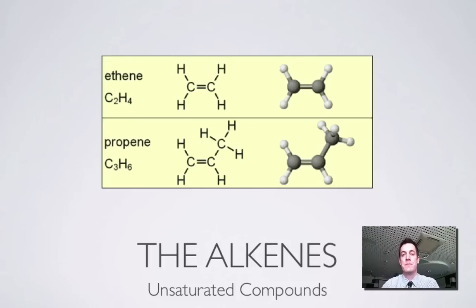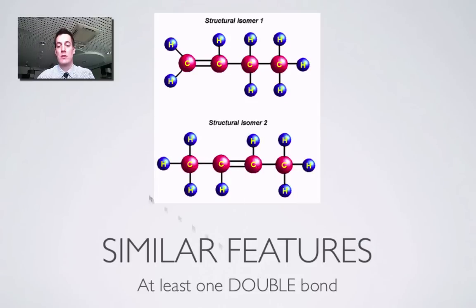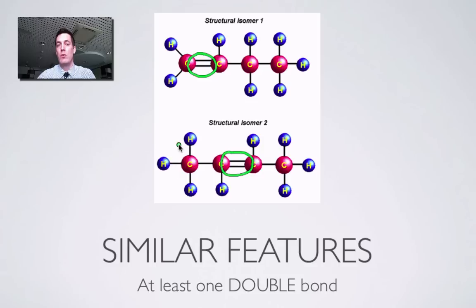Now we'll move on to the next homologous series — this one's called the alkenes. Very similar name to alkanes but different in one very important way: these are what are called unsaturated compounds. Alkanes are called saturated because we couldn't put any more atoms into the molecules since all the bonds were taken up. But with an alkene, you've got to have at least one double bond in the molecule — that's what makes a molecule a member of the alkene series: carbons and hydrogens with at least one double bond. Because of that double bond, if we were to open it up, we could put other atoms into the molecule.